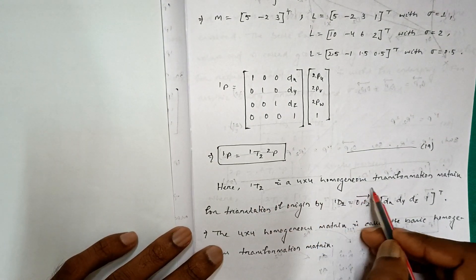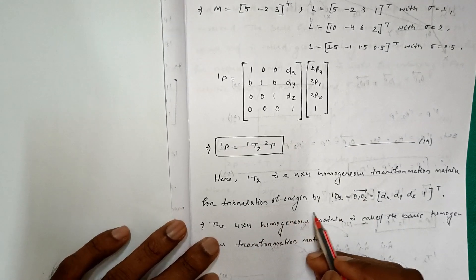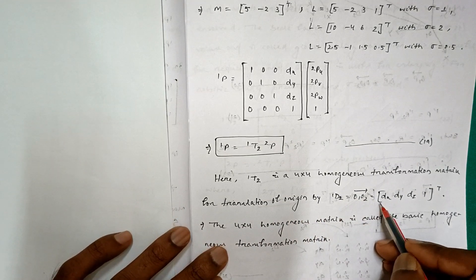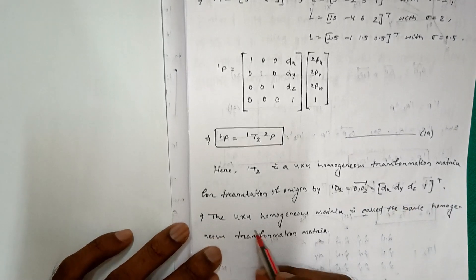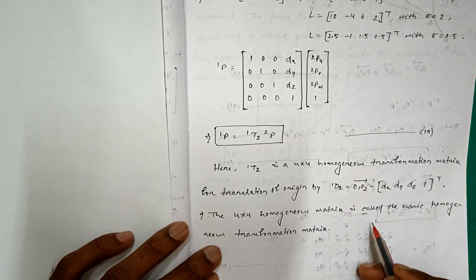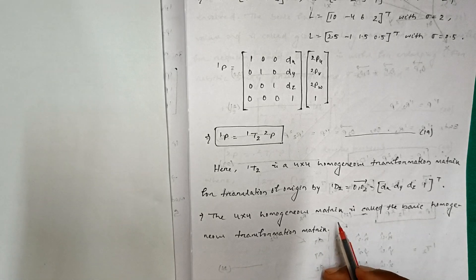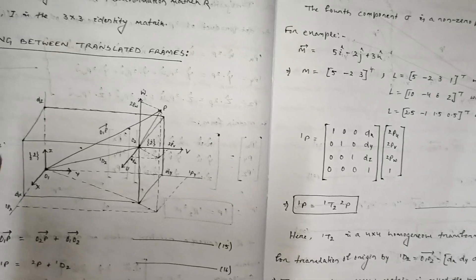Here 1T2 is a 4×4 homogeneous transformation matrix for translation of the origin by 1d2, that is the vector O1O2 equal to [dx, dy, dz, 1] transpose. This 4×4 homogeneous matrix is called the basic homogeneous transformation matrix. This covers mapping between translated frames.